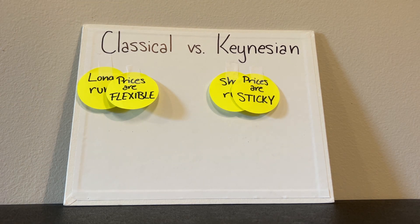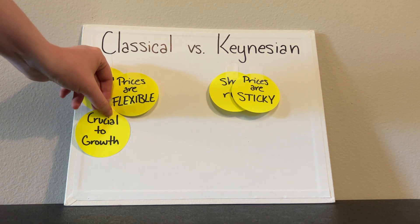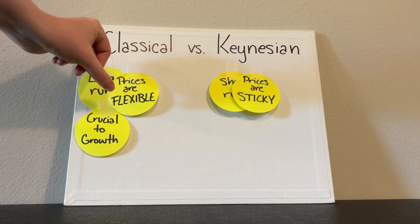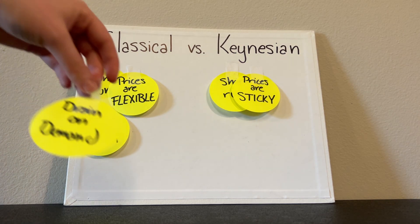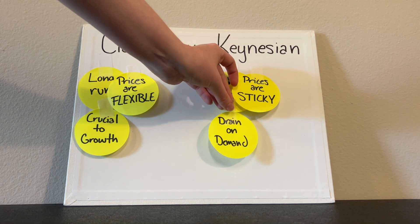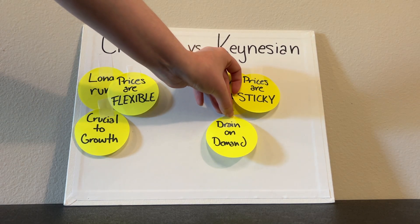Savings for classical economics, that's crucial to growth, whereas for Keynesian, they believe that it is a drain on demand.